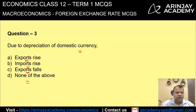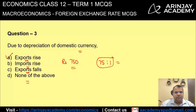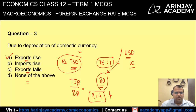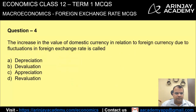Due to depreciation of the domestic currency, what happens? Export rises, import rises, export falls, or none of the above? The correct answer is export rises. Suppose something was available for 750 rupees and the conversion rate was 75 to 1, meaning a US buyer needed $10 to buy this good. Now if the rate changes to 80 rupees per dollar, the buyer only needs 750 divided by 80, which is approximately $9.40. For a US buyer, the price has fallen, so they will buy more — and therefore exports will rise.